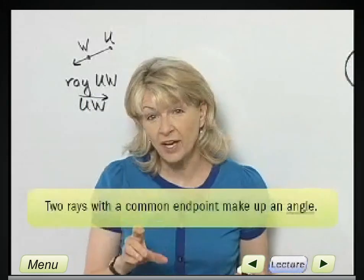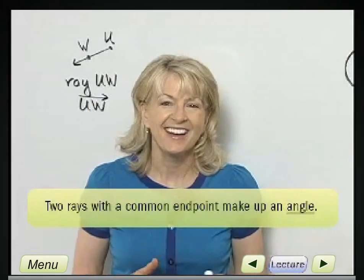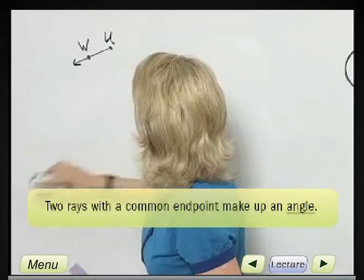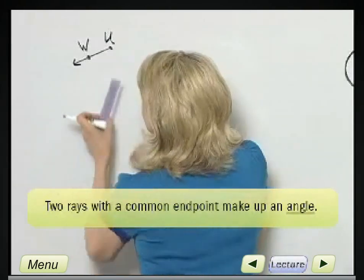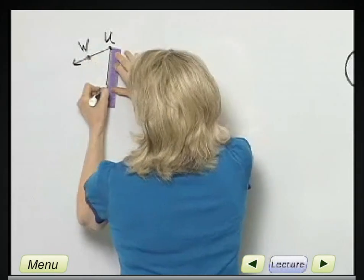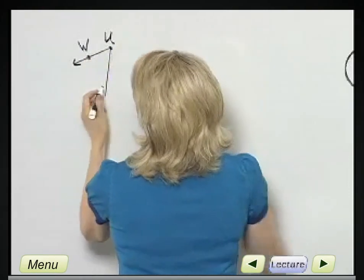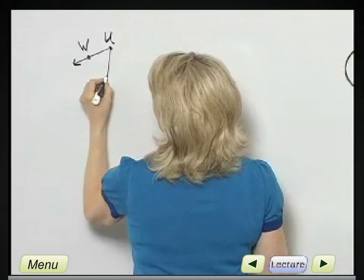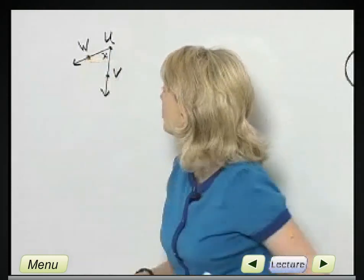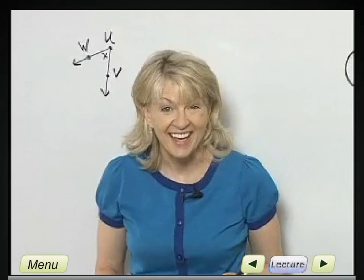Now if I have two rays with a common endpoint, I actually have an angle. So let's just look quickly at an angle. I'll extend from this endpoint U another ray. Maybe I'll call a point here V, and maybe I'll call this small X, and we have an angle.